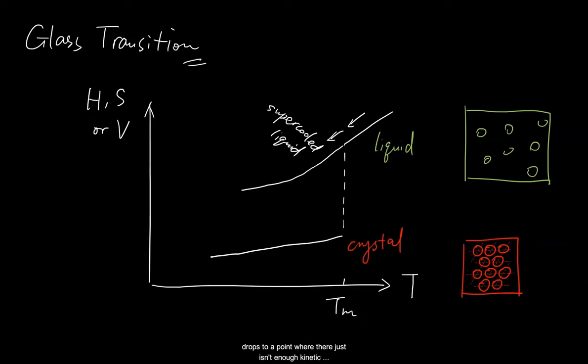Molecules that face kinetic barriers to crystallize maintain the mobility of a liquid, until the temperature drops to a point where there just isn't enough kinetic energy to keep the ball rolling. The molecules would thus fall out of equilibrium to form a glass at this temperature, known as the glass transition temperature, or TG. As I've mentioned before, a glass is an amorphous solid-like matter, and you may have noticed that it has higher enthalpy, or higher energy, than the crystal.